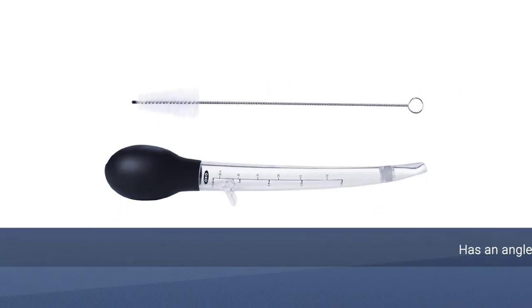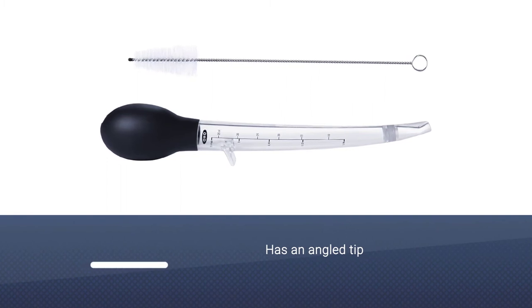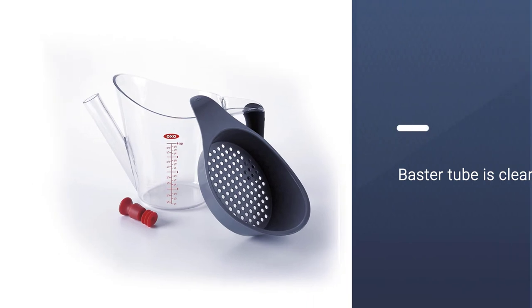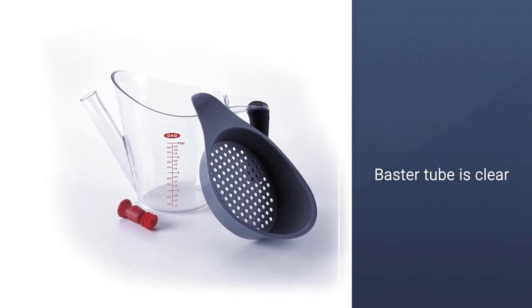The baster has an angled tip that makes it easy to get the juices from the bottom of a roasting pan, and a silicone bulb that's easy to hold and squeeze. The baster tube is clear and has measurements in both US and metric.